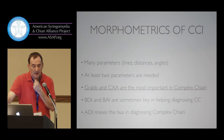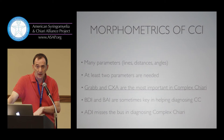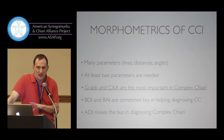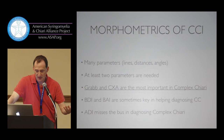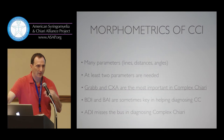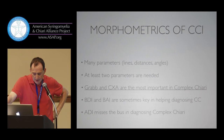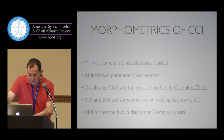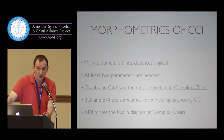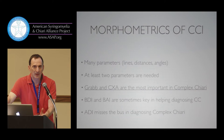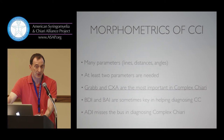The BDA and BDI are also important sometimes — particularly for a small subset of patients where GRAB and CXA are equivocal or borderline, yet the patient still has all the signs and symptoms suggesting complex Chiari. The ADI misses the bus in the diagnosis of complex Chiari, so don't blame the messenger: if a neurosurgeon doesn't know how to do the GRAB and CXA because he grew up with the ADI, he simply wore the pair of glasses he was trained with.